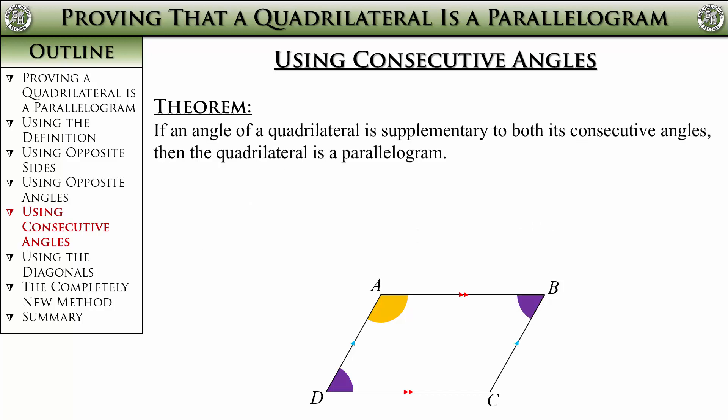To use it you have to pick one of the four angles. I chose angle A, and then show that it is supplementary with both of its consecutive angles, the purple ones here. Show those two things and you have proven the quadrilateral is a parallelogram.